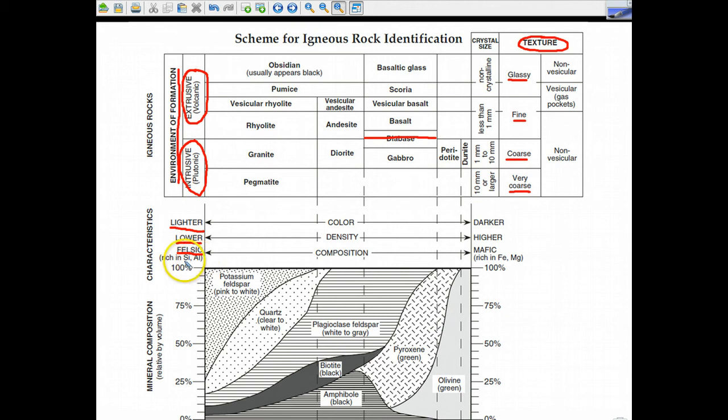And they are rich in Si and Al. Si is silicone, or some people would say silicon, and aluminum, or some people would say aluminum. On this side of the chart, they are darker in color, they're higher in density, and there's something called mafic, which they are rich in Fe, which is iron, after ferrous. And then magnesium. So, those are the elements that would make it mafic, which we'll talk more about that.